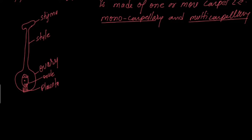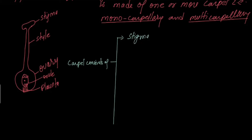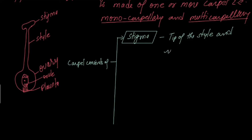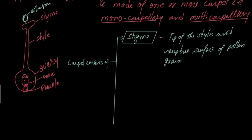So here we understand that the carpel consists of several parts. The first part is the stigma — the uppermost part, like a platform at the tip of the style. It is the receptive surface for pollen grains; pollen grains come and sit here.